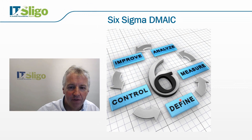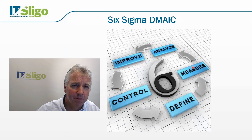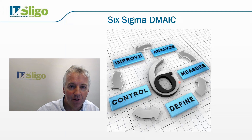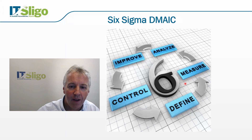We've moved through the define phase and now we're moving into the measure phase. In the measure phase we're going to look at some key performance indicators, some lean metrics, and some Six Sigma or quality metrics such as DPU, DPMO, and yield. We're going to take the example again of the pen holder assembly.